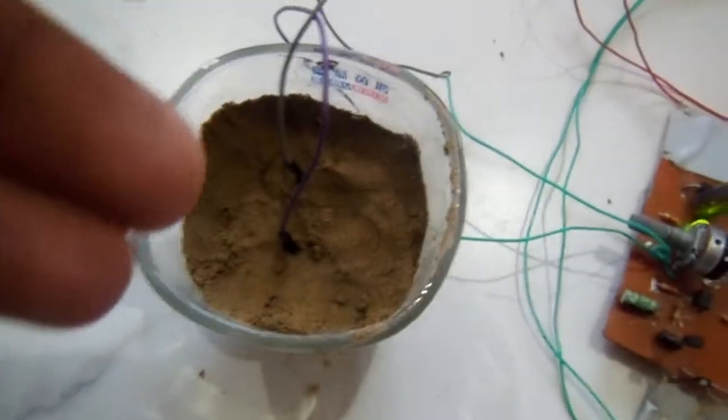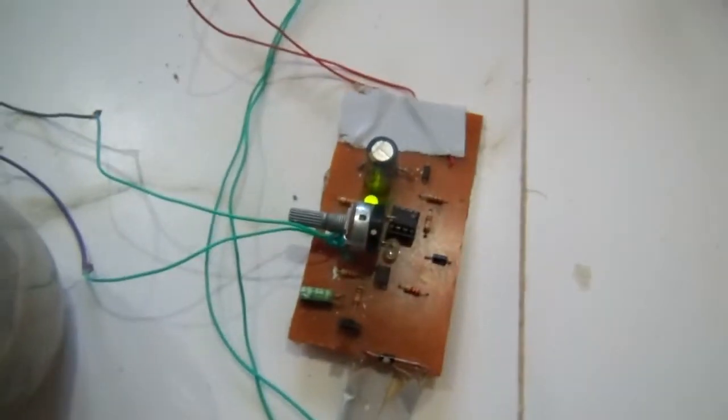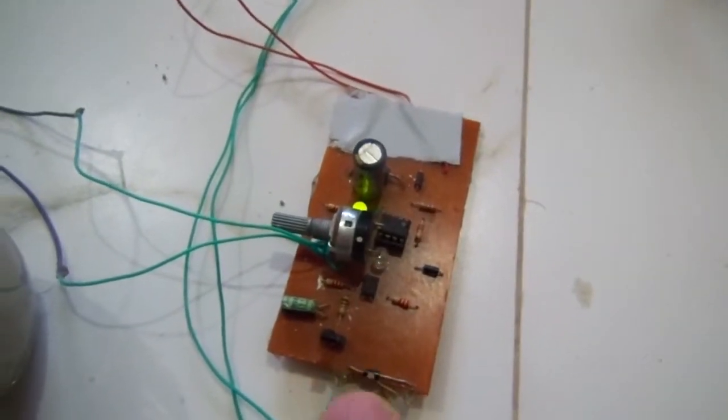After watering the plants and reaching to the sensor, the system will stop. The transistor will stop the relay and the relay will stop the solenoid coil. This is the automatic plant watering system.